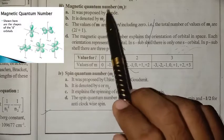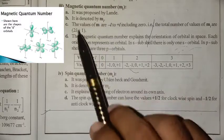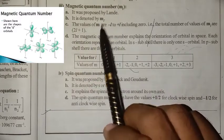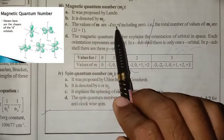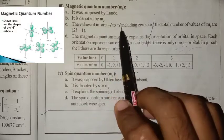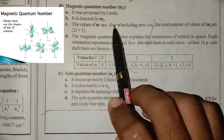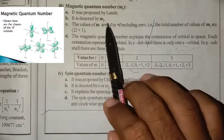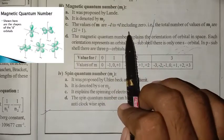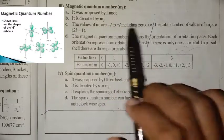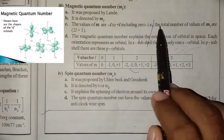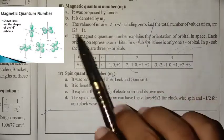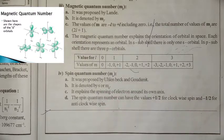The magnetic quantum number is denoted by ML. The value of M ranges from minus L to plus L, including 0. It is like: minus L, 0, plus L. Therefore, the total number of values of ML is 2L plus 1.